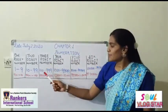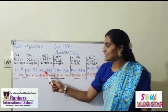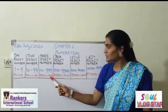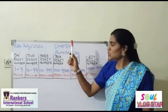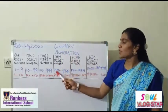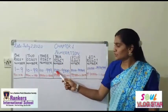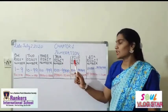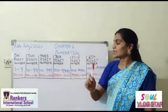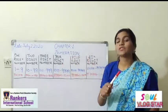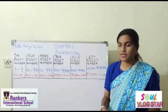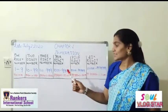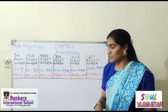If we add 1 to 999 it will become 1000. Now 1000 is the four digit number. So the four digit number starts from 1000 to 9999. 1000 is the smallest four digit number and 9999 is the greatest four digit number.